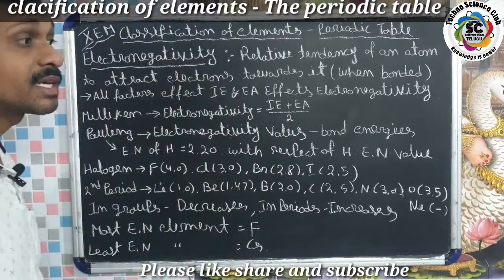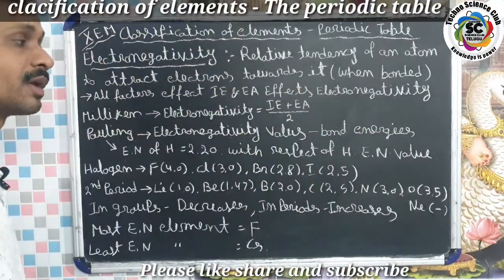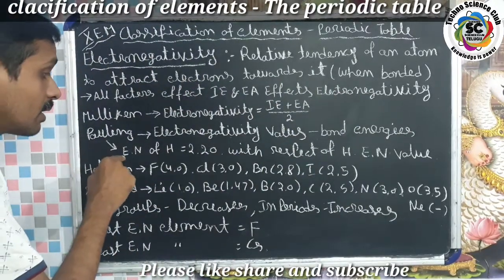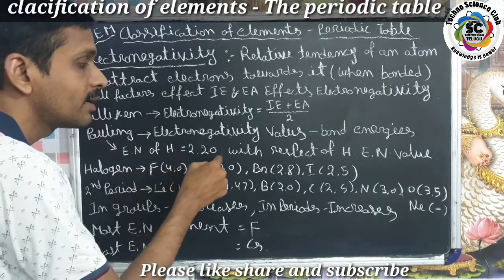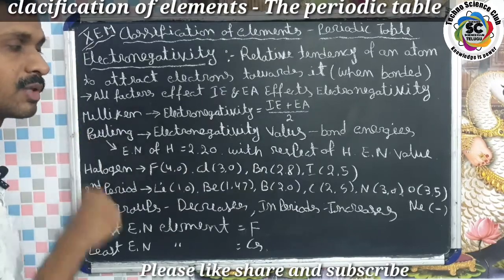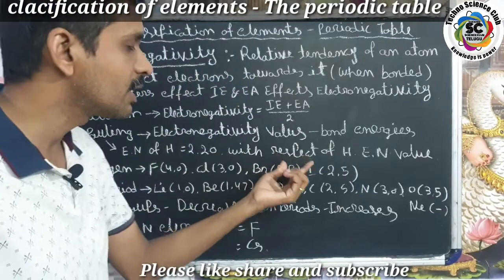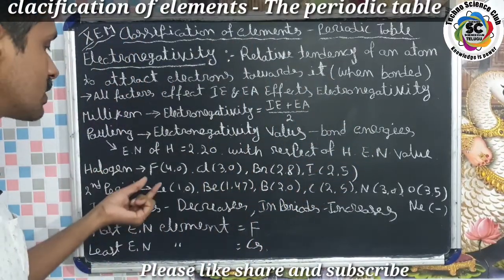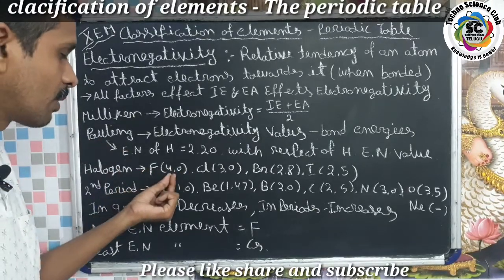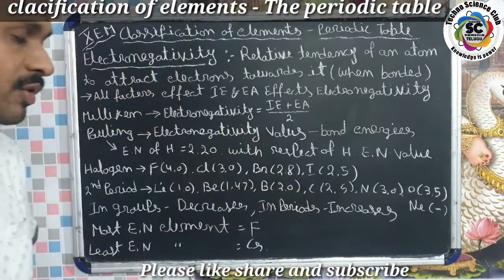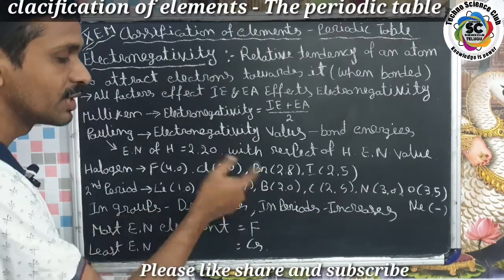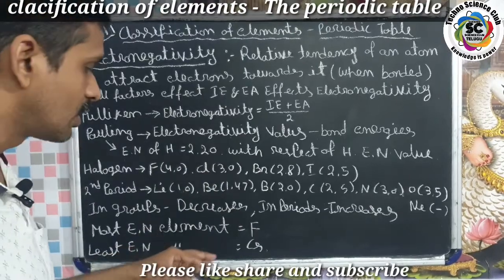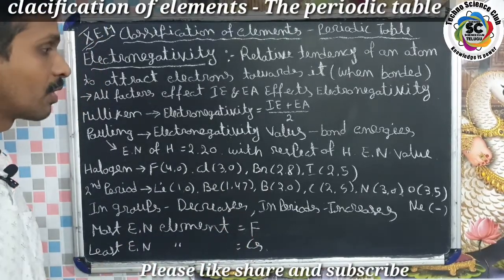The electronegativity values are based on bond energies. Scientist Pauling found the electronegativity value of hydrogen as 2.20, and the electronegativity values of other elements were described with respect to hydrogen. Fluorine has the highest electronegativity value of 4.0. Electronegativity decreases in groups and increases in periods. The most electronegative element is fluorine and the least electronegative element is cesium.